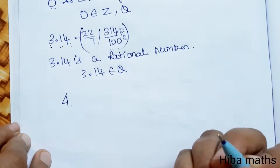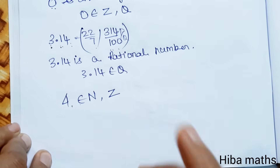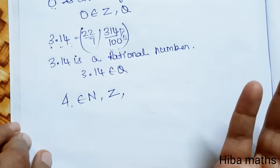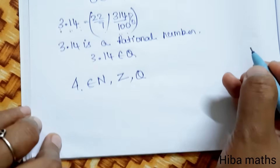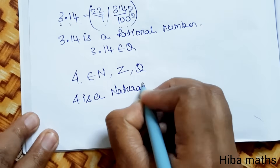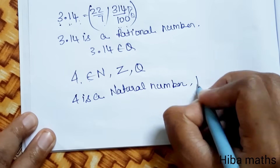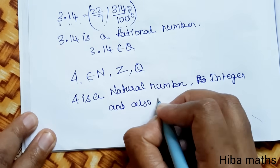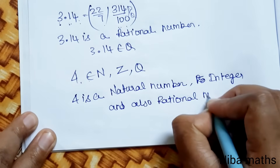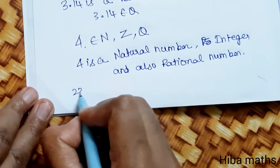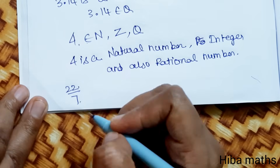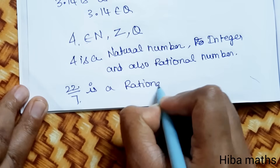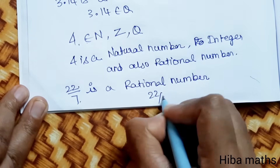Next is 4. The number 4 is a natural number and also an integer. Since 4 can also be written in P by Q format, it belongs to rational number Q as well. So 4 is a natural number, integer, and also rational number. Finally, 22 by 7 is in P by Q format, so it is a rational number. Therefore, 22 by 7 belongs to Q.